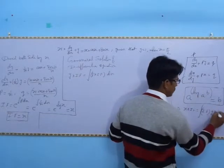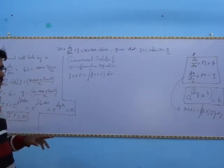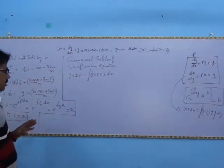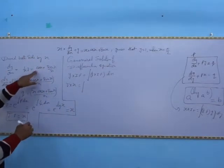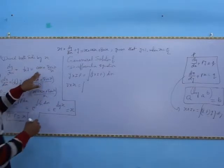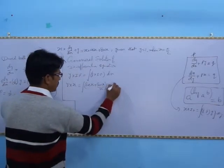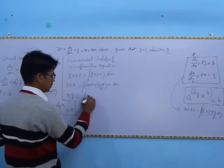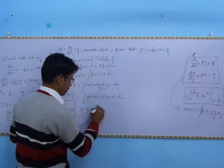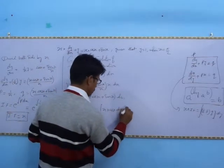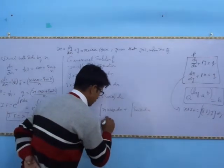We integrate the whole term. So xy equals integration of x times (x·cos x plus sin x) dx, which gives integration of x·cos x dx plus integration of sin x dx. The first term requires integration by parts using the ILATE rule: u times v minus integral of u prime times v.